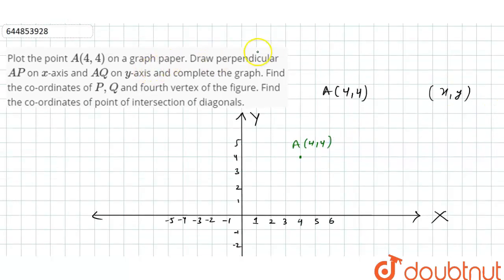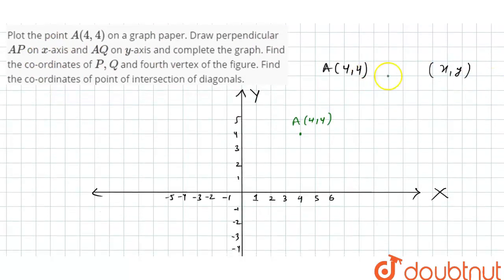Now according to question, draw perpendicular AP on X-axis. So now perpendicular means 90 degree. So we'll draw a 90 degree on X-axis from A. This will be AP. This is perpendicular, that is 90 degree. This is point P.